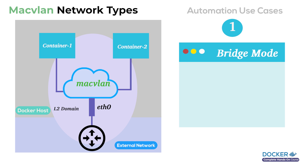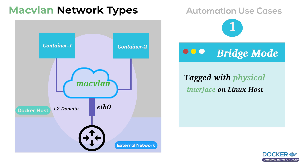In bridge mode, all the traffic from the container passes through the main interface on the Docker host to the external world. As you can see in this diagram, you would need to provide the information of your host machine like host interface, subnet, and gateway which connects to the external network.